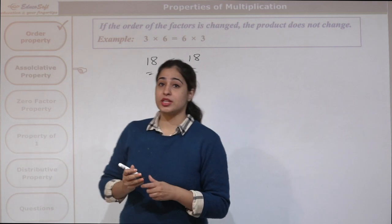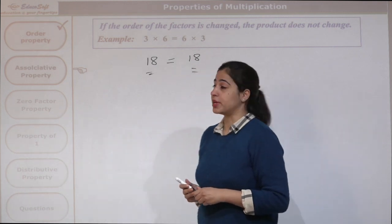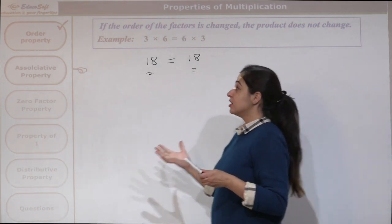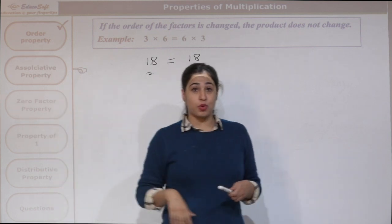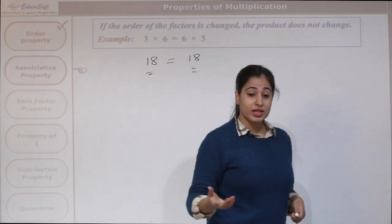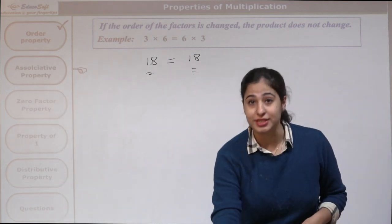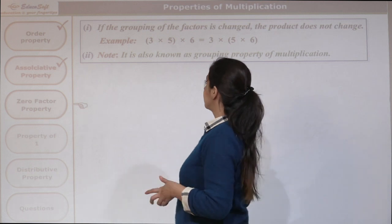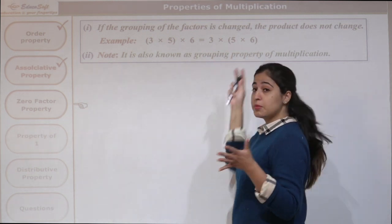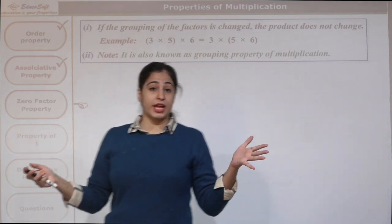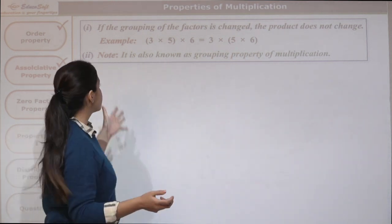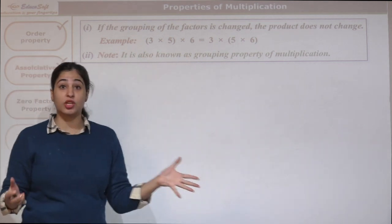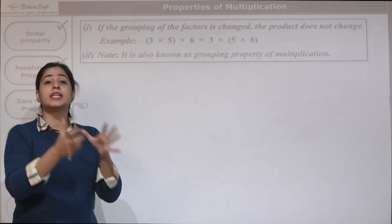So this is our order property. Now the second property is the associative property. Here we have 3 numbers on both sides, and it says if the grouping of the factors is changed...